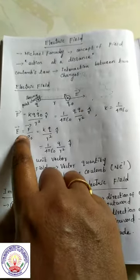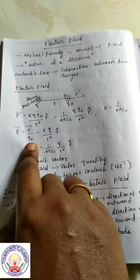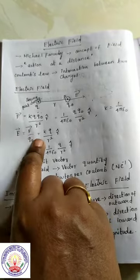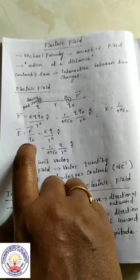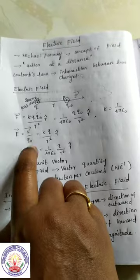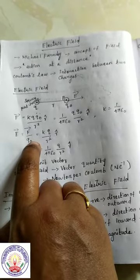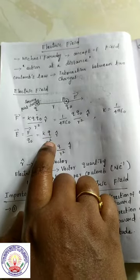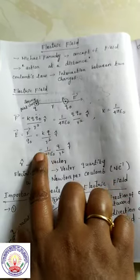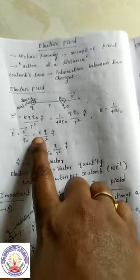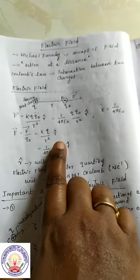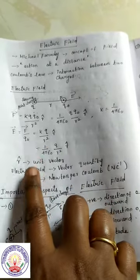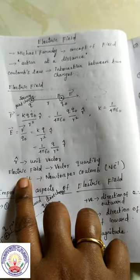Electric field means force by charge. This is the formula. What is electric field? What do you mean by electric field? Electric field is force by charge. The charge is test charge, denoted by Q0. So E = K·Q / R² · R̂. Then K value is 1 by 4 pi epsilon 0, into Q by R square R cap. R cap is the unit vector.